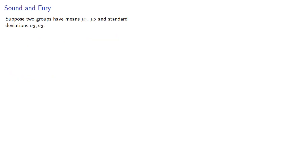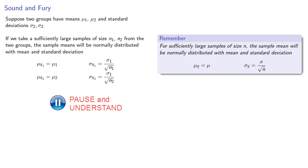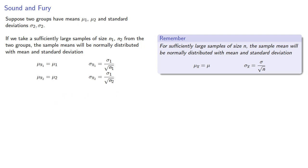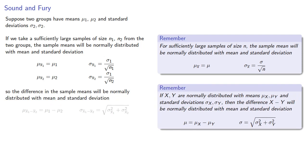Suppose two groups have means mu1, mu2 and standard deviations sigma1, sigma2. If we take sufficiently large samples of size n1, n2 from the two groups, the sample means will be normally distributed with mean and standard deviation given by the formulas. So the difference in the sample means will also be normally distributed with its own mean and standard deviation.